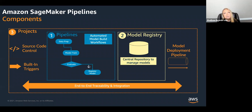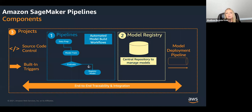SageMaker Projects is really what ties all of this together while also incorporating CI/CD practices on top of that. Projects includes pre-configured MLOps project templates that allow you to automatically create and configure your machine learning pipelines — incorporating practices like source and version control without having to go in and separately set up the integration to your source code repository or manually set up event triggers to trigger those pipelines based on new code committing. Projects uses pre-configured templates to automatically set all that up and stitch together all of those pieces of the pipeline.